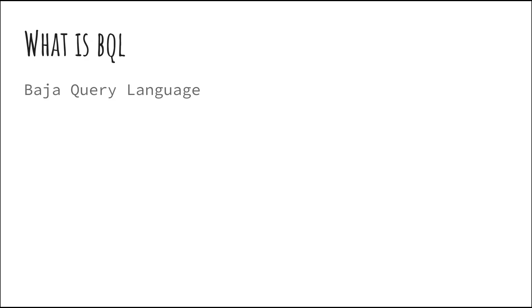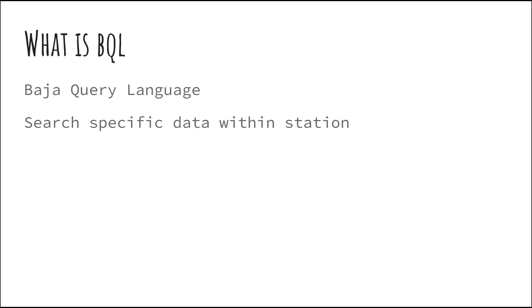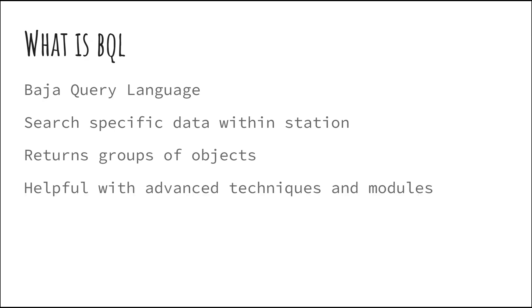BQL is an incredibly useful language that can be used in all versions of Niagara. BQL stands for Baja Query Language. It's made to search for specific data within your station and then return groups of whatever objects you need. A working knowledge of BQL is very helpful for working with many more advanced techniques and modules — including Vicom Pro modules that depend upon BQL queries to quickly grab device summaries and basic data tables during commissioning.